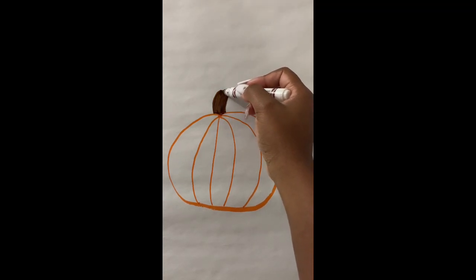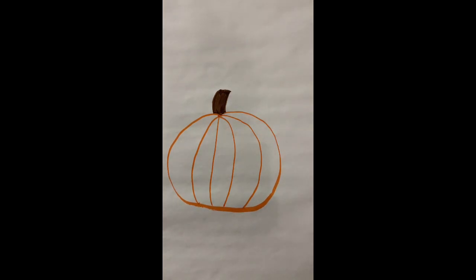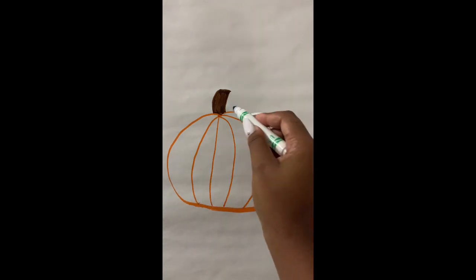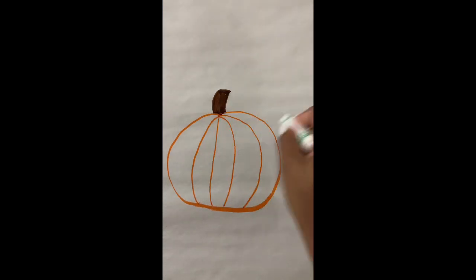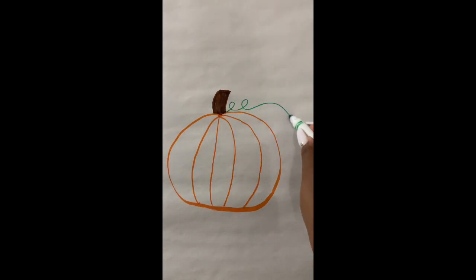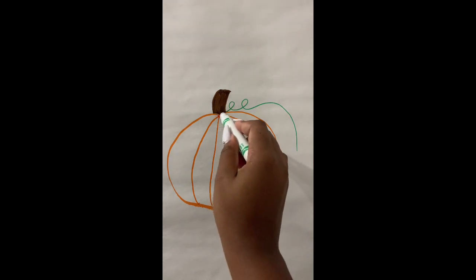Now I'm gonna take my green and I'm going to make a vine with a curly line, so I'm gonna make little curls and swirls starting right underneath the vine and going out away from the pumpkin.